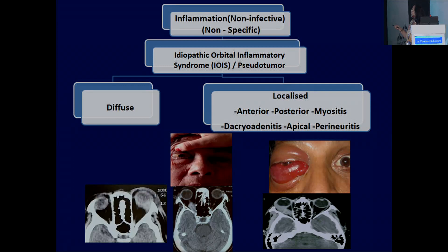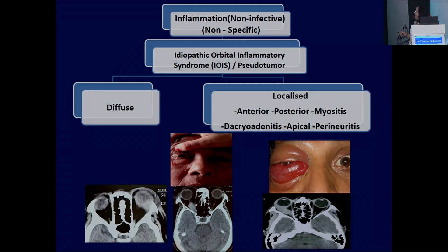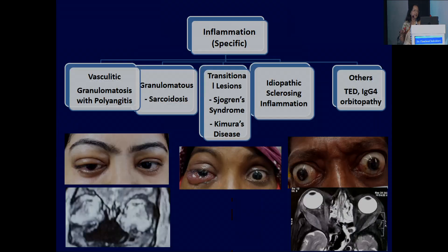There are some examples. It could be a diffuse inflammation or it could be a localized inflammation. A localized IOIS can present like a case of dacryoadenitis. It can present as the apical variety — involving the orbital apex or cavernous sinus — or it can involve a single muscle or multiple muscles. These are the different varieties, and you should remember that these things may be combined also.